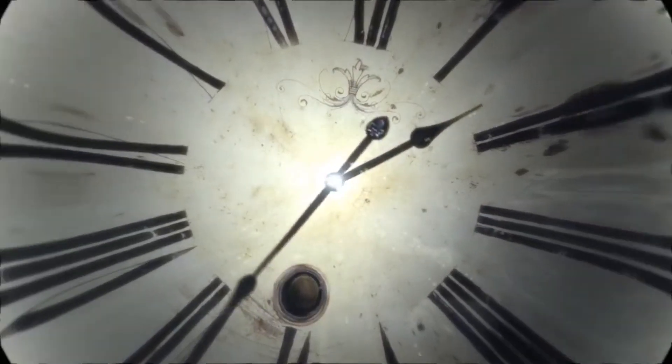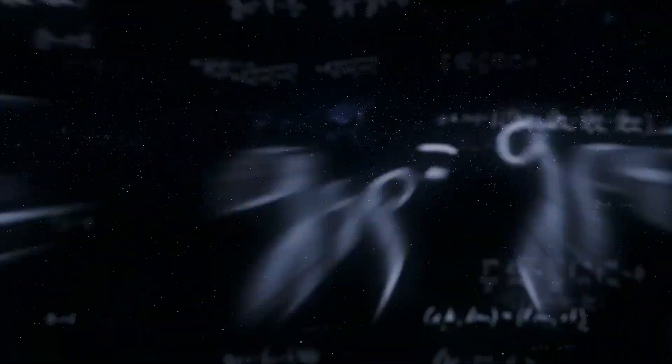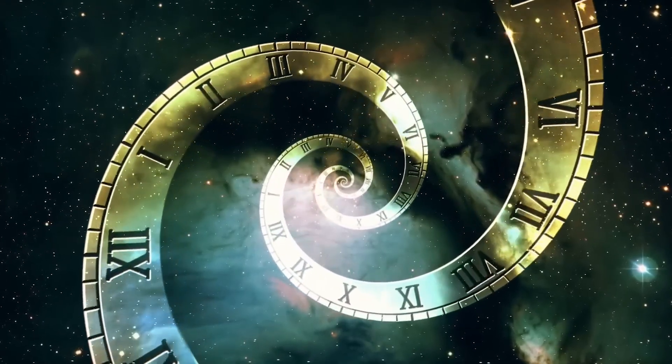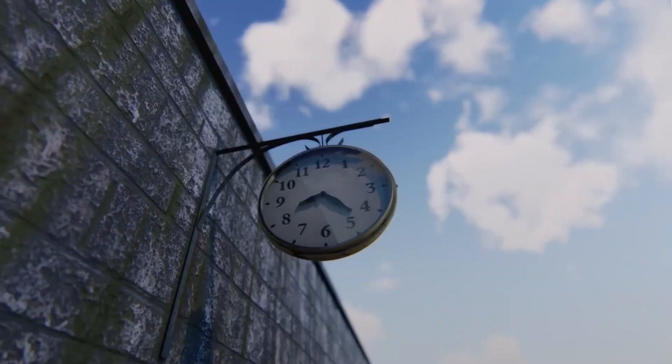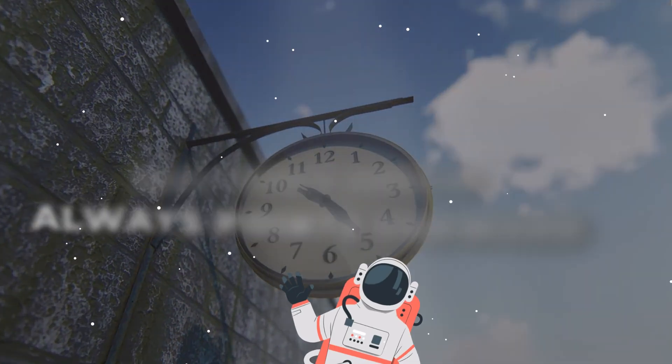Have you ever wondered why time seems to flow in one direction only? Why can't we go back in time and change the past? These are questions that have puzzled philosophers and scientists for centuries. In this video, we're going to explore the nature of time and try to answer the question of why time's arrow always points forward.